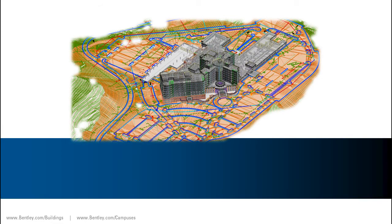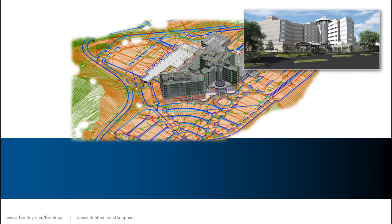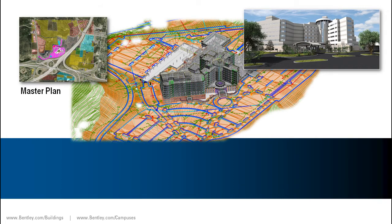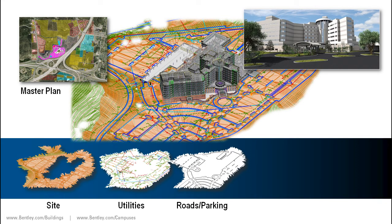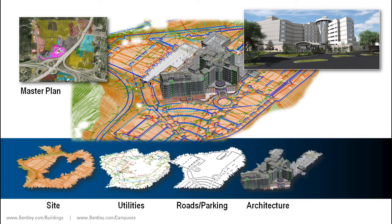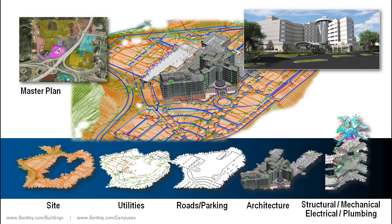The solution enables collaboration to efficiently model and document all aspects of a facility. Existing land conditions can be mapped for a campus master plan, site improvements modeled including utility, roads, and parking, and a complete suite of building products can be used to create a building information model optimizing all of the engineering disciplines.